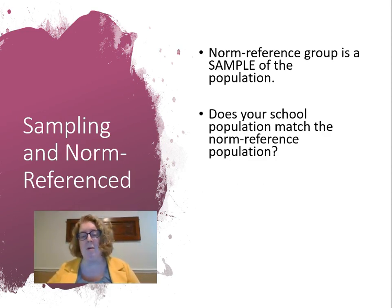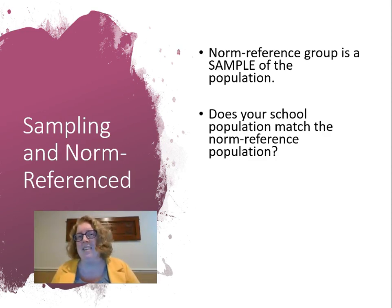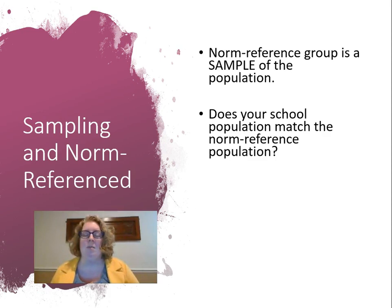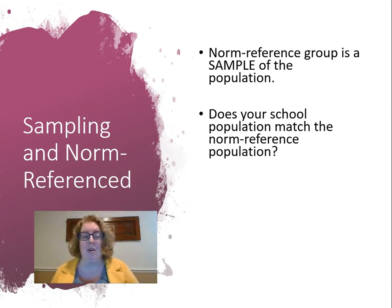You want to think about things like whether your school is suburban, urban, or rural. Are schools from your state included in that norm reference population? Your geographic location — north, south, coastal, inland — might be important. Also the size of your school: small, medium, or large. And whether it's a parochial, private, public, charter, or magnet school — all of those things matter and you want to make sure your type of school is included in that norm reference population.